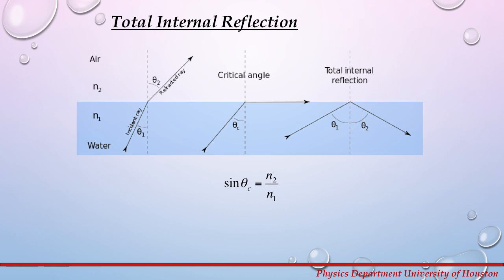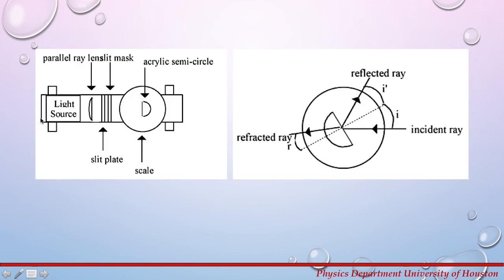Now let's talk about the experimental setup for this week. On the optical bench you're going to have a light source, a parallel ray lens, slit mask, and slit plate, and then a rotating scale. At the center of this scale you're going to have an acrylic semicircle made out of lucite. The goal of this experiment is to change the incident ray angles, measure the refracted and reflected ray, and analyze your data using Snell's law to determine the index of refraction for this acrylic semicircle.